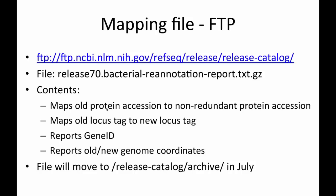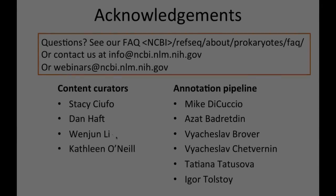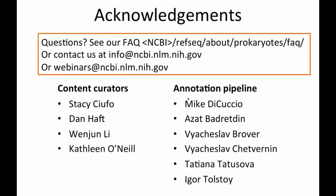This file also maps old locus tags to new locus tags. We had to annotate our genomes with new locus tags because we are now providing de novo genome annotation for all of our records, and there are some new genes being called, so we cannot rely on existing submitted locus tags. It also reports information on gene ID mapping for people who are interested in that from NCBI's gene resource. If you have questions, you can look at the online documentation, our FAQ, or contact us at info at NCBI or webinars at NCBI.